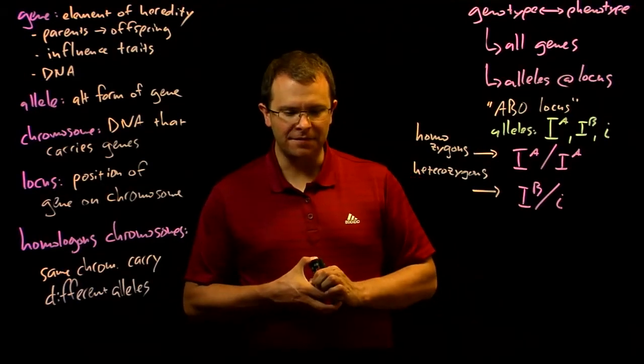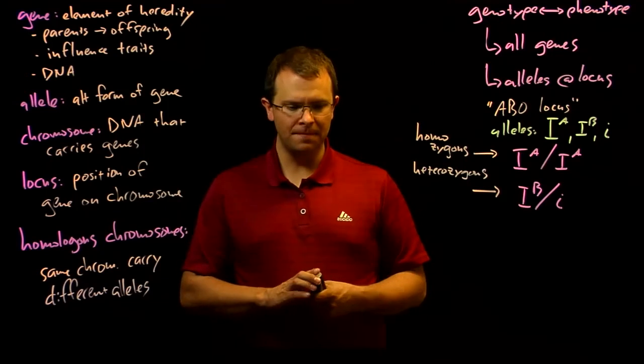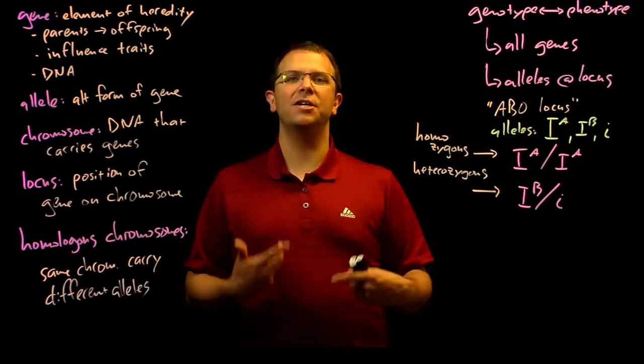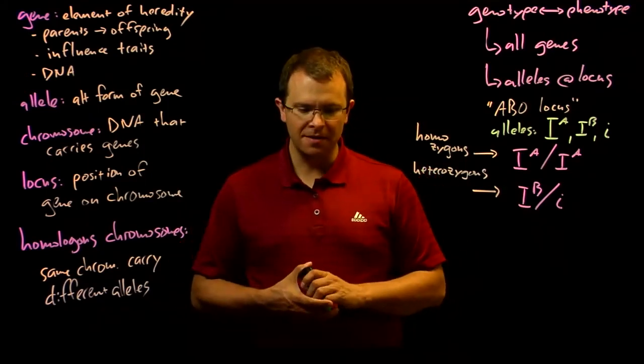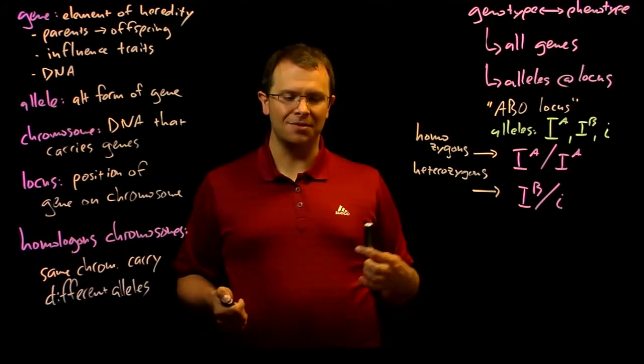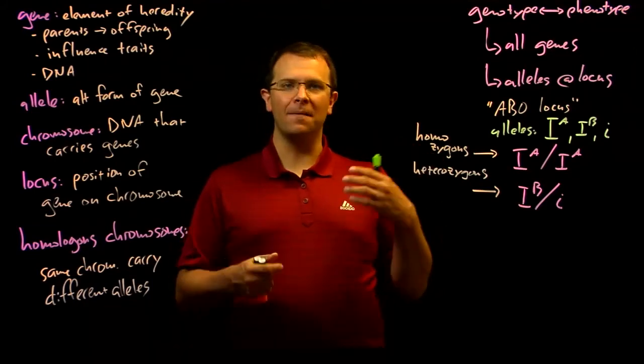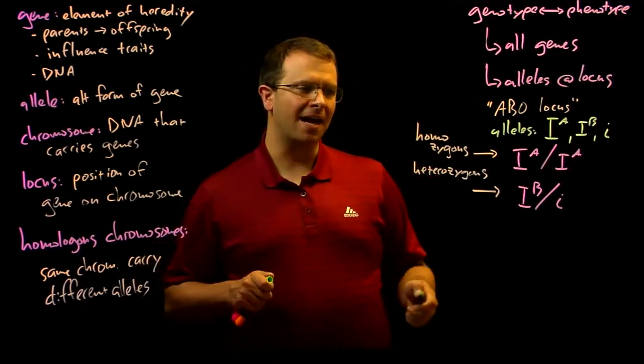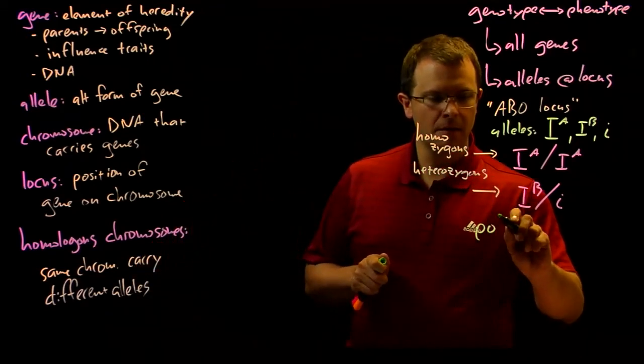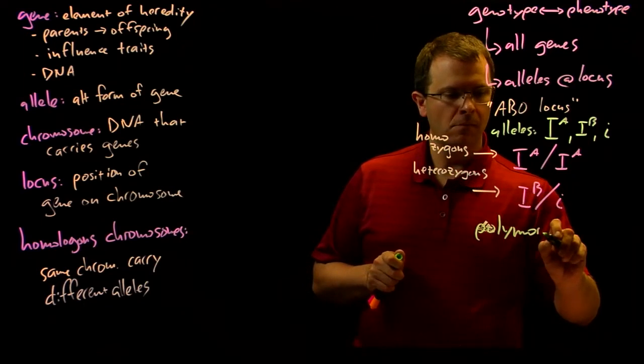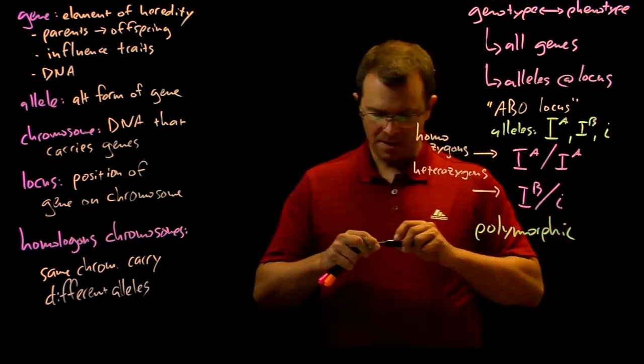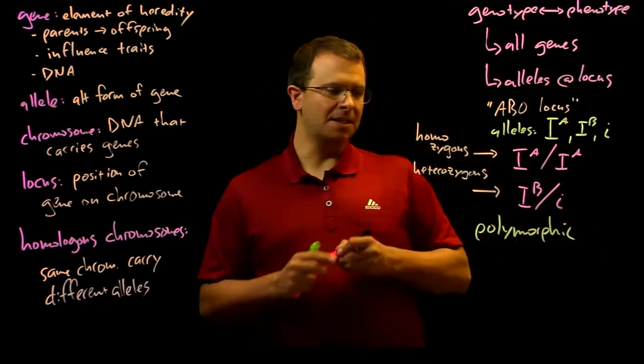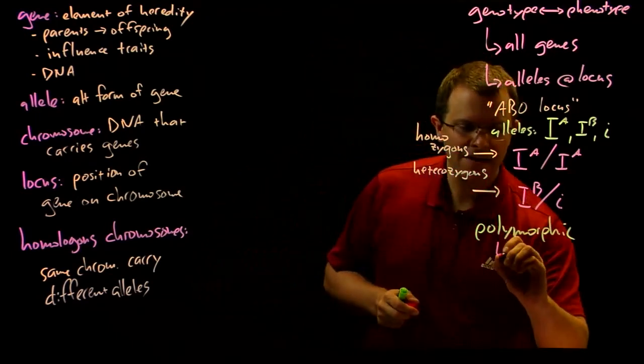Loci that have different alleles that have a high variation throughout a population, we call these variant loci, these places where genetic variation is common, we call these loci polymorphic. So a polymorphic locus is a locus with high variation.